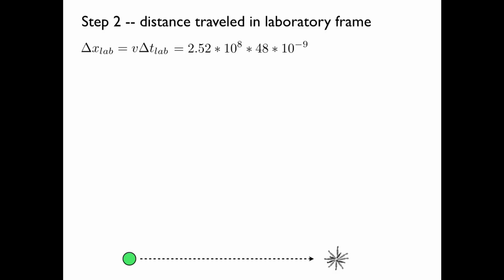We plug in the numbers, and we find that the pion traveled 12.1 meters from the point that it was created to the point that it decayed.